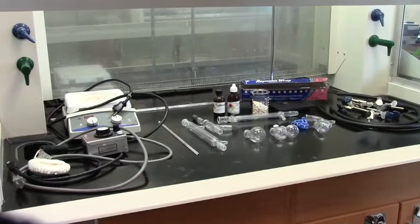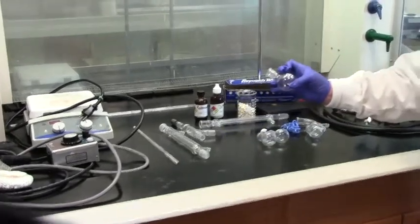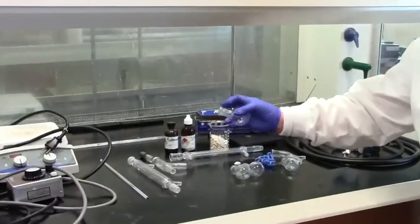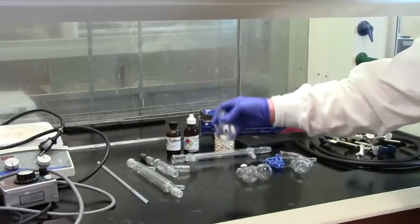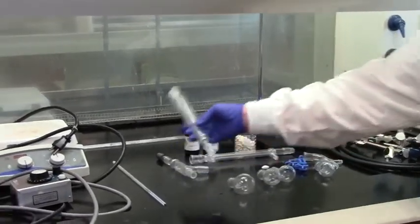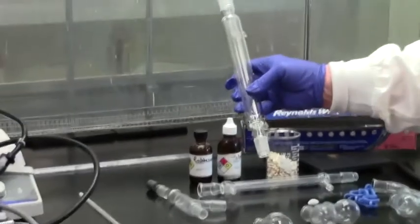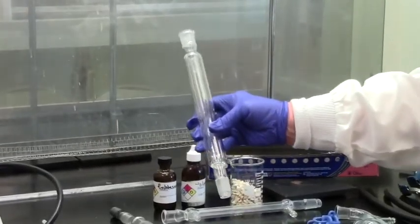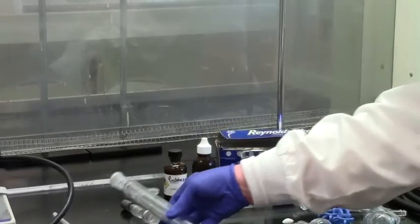We will be using a 50 milliliter round bottom flask which will serve as our distilling flask that will be connected to the fractionating column. It looks very similar to the condensing column but it is thicker. We're going to talk about the packing material a little bit later.